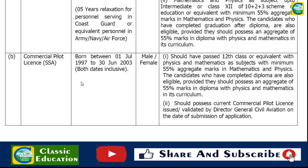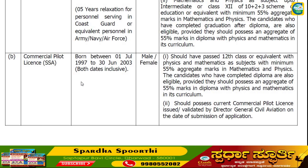For the education qualification, candidates should have passed 12th class or equivalent with Physics and Mathematics as subjects, with a minimum 55% aggregate marks in Mathematics and Physics. Candidates who have completed a diploma are also eligible, provided they possess an aggregate of 55% marks in diploma with Physics and Mathematics in its curriculum. So if you have passed 12th standard with Physics and Mathematics at 55%, or a diploma with Physics and Mathematics at 55%, you will be eligible.